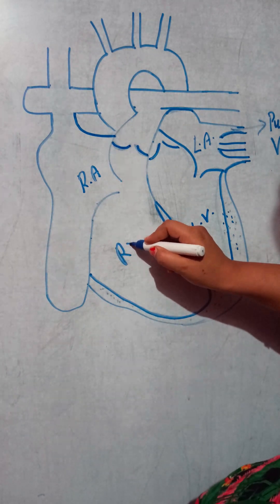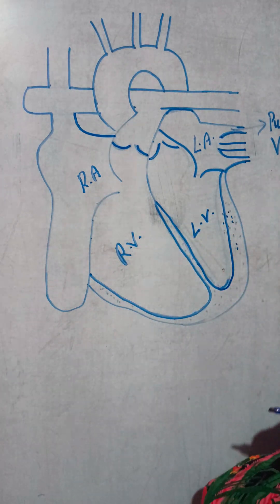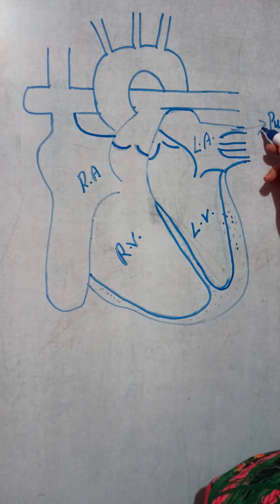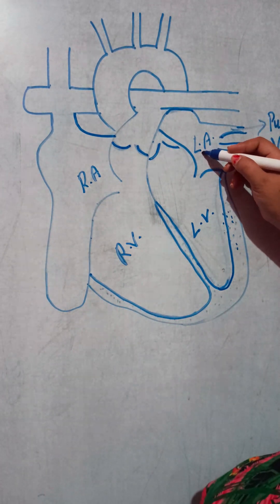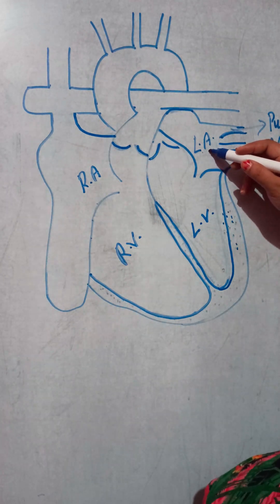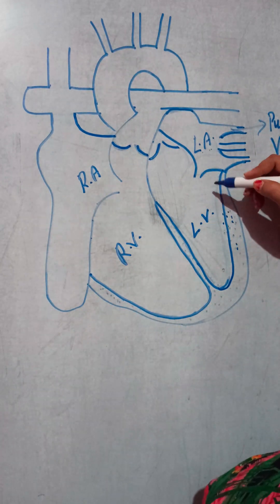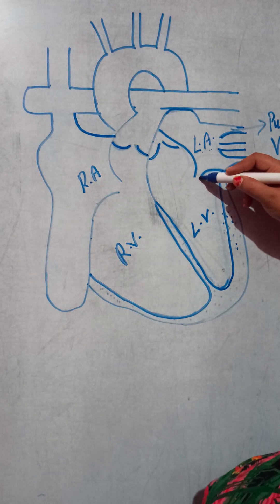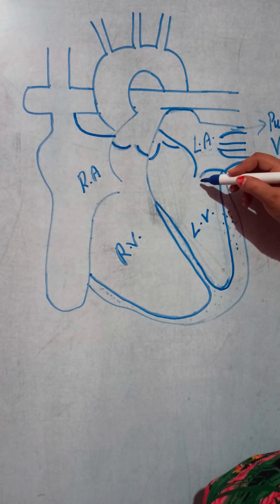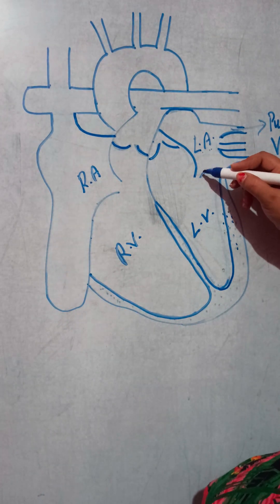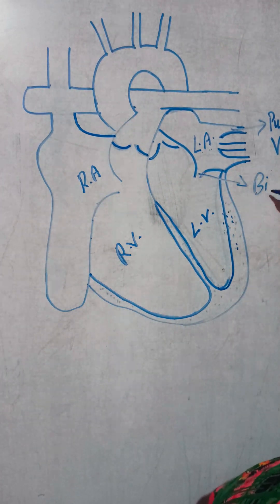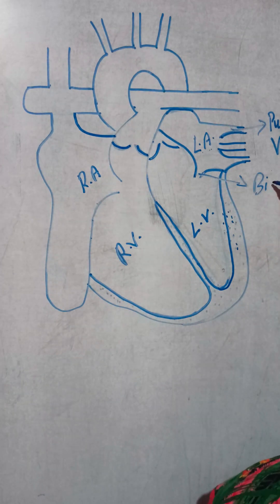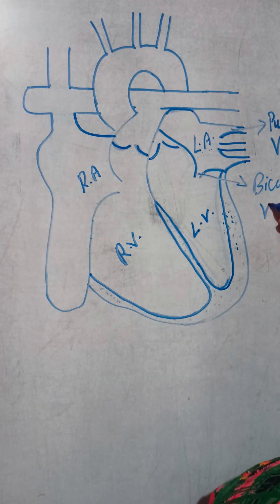The right ventricle is also visible here. Oxygenated blood comes from our lungs into the left atrium. Between the left atrium and left ventricle, here you can see the bicuspid valve. I'm going to name it the bicuspid valve.